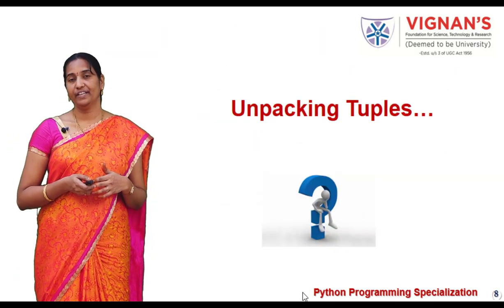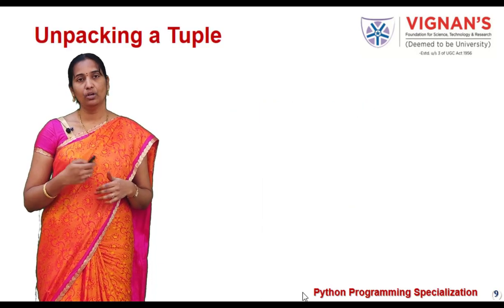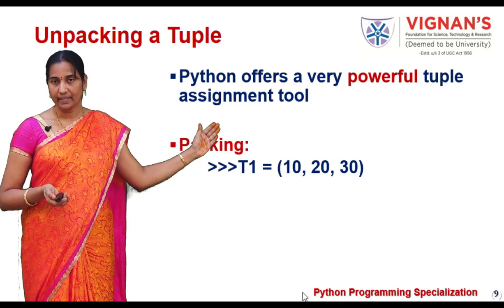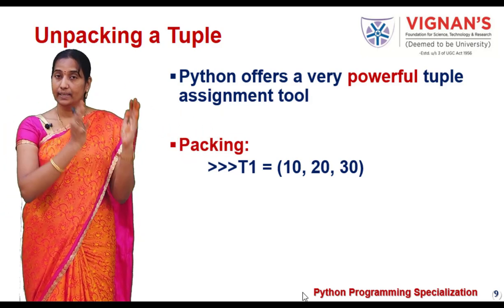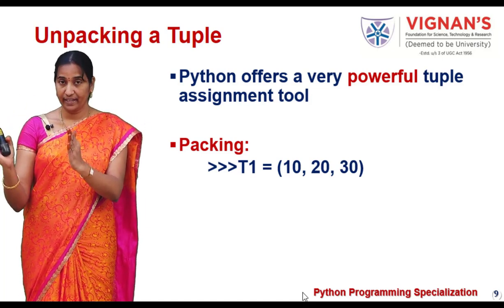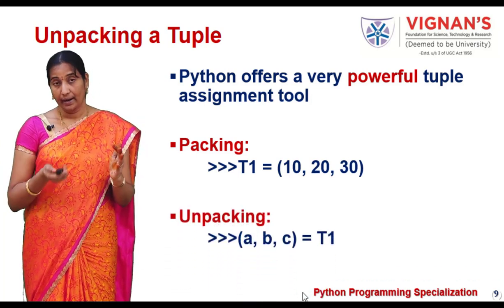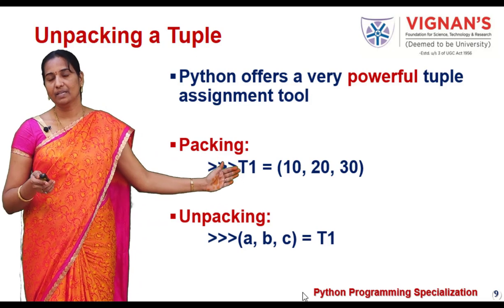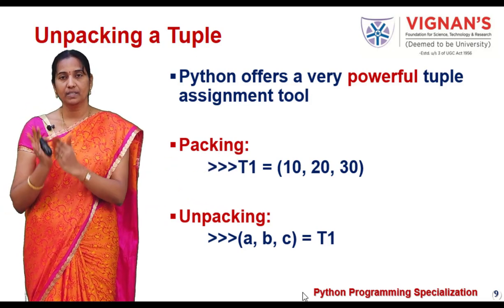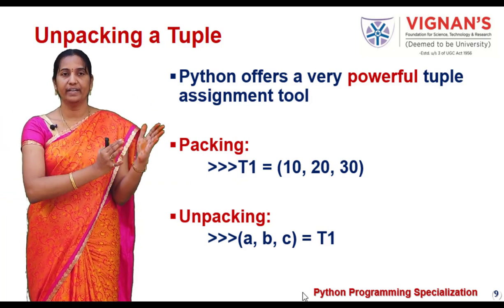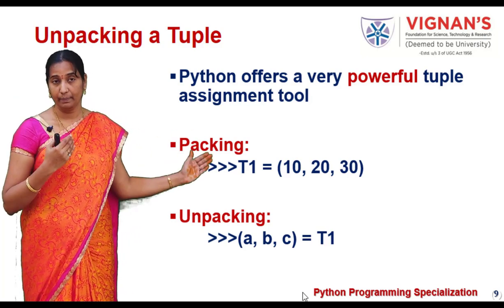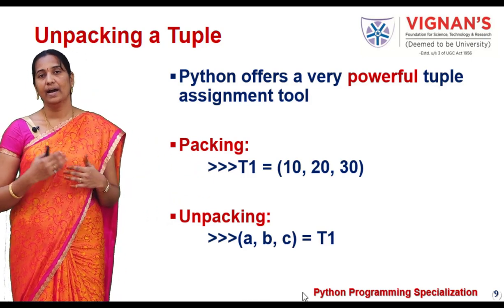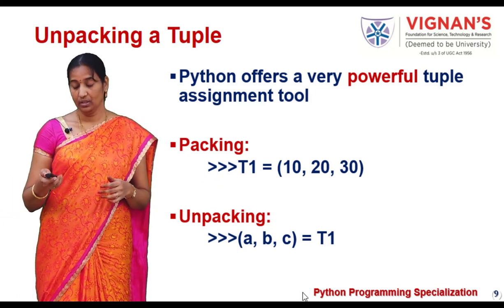Now let us see another powerful feature that comes with tuples — unpacking. Python offers a powerful assignment tool with tuples. Assigning a collection of elements to a tuple object is known as packing. Unpacking is the reverse of that, where a tuple object is assigned to individual variables. With the operation a, b, c equal to t1, whatever individual elements are available in t1 — that is 10, 20, 30 — they will be assigned to the variables a, b, c respectively. So that is packing and unpacking with regard to the tuple data structure.